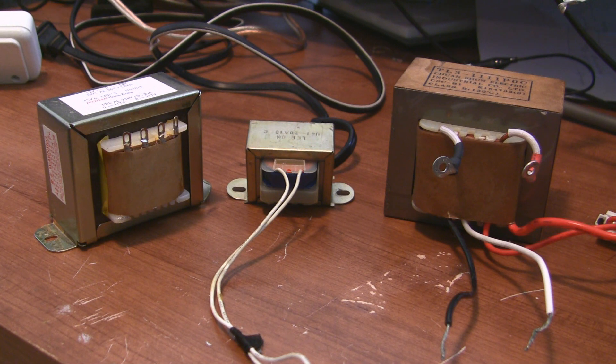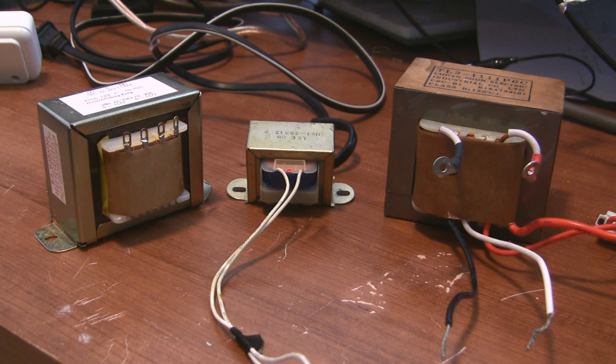And when you remove the protective casing, all transformers end up looking kind of like this, with a bunch of wires wound around an iron or ferrite core.